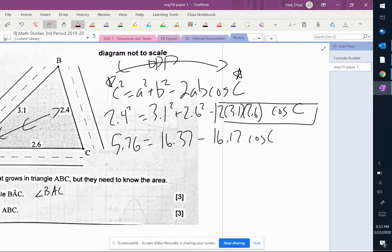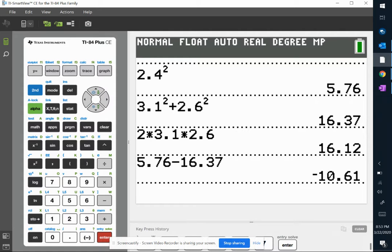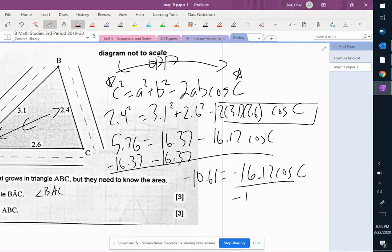Now remember, those are not like terms, so we have to do this like this. 5.76 minus 16.37 is negative 10.61. So negative 10.61 equals negative 16.12 cosine of C. We're going to divide by that.